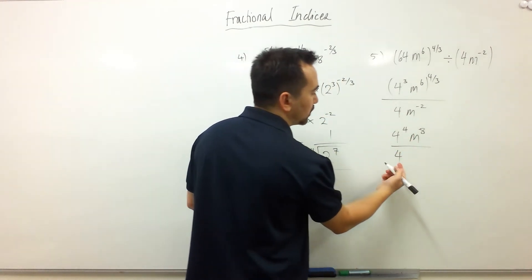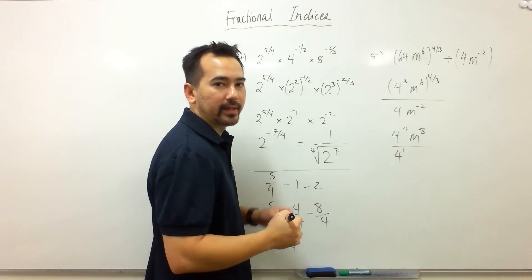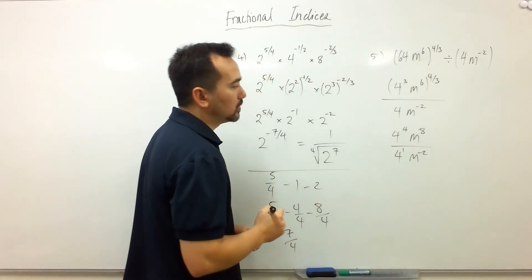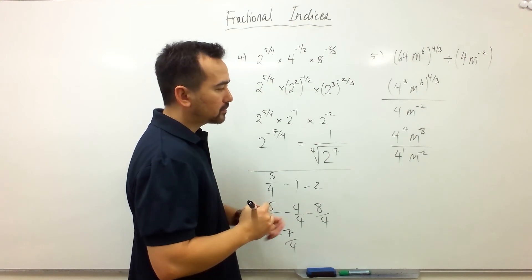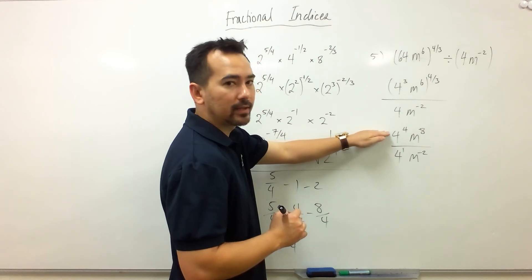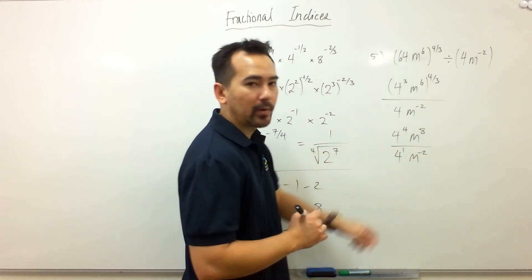Just to make something clear, I'm going to put a 1 in there to show that that is 4 to the power 1, M to the power negative 2. If I move these two terms in the denominator up into the numerator, the signs on the powers will change.